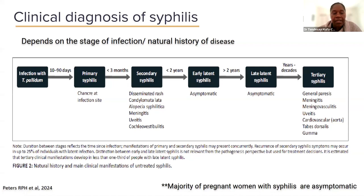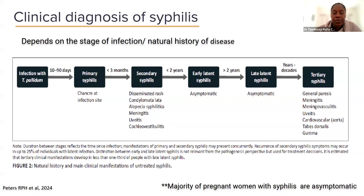The occurrence of syphilis in pregnancy is very similar to syphilis in any other individual, and how it presents depends on the stage of infection — from primary, secondary, early latent, late latent, and tertiary syphilis. But most pregnant women are asymptomatic, and that's why screening and testing during pregnancy is the cornerstone of the global plan to eliminate congenital syphilis. Women may have an ulcer during pregnancy, requiring midwives and caregivers to check for signs of genital ulcers or skin rash, but the majority of women are asymptomatic and will only be picked up through administering a test.